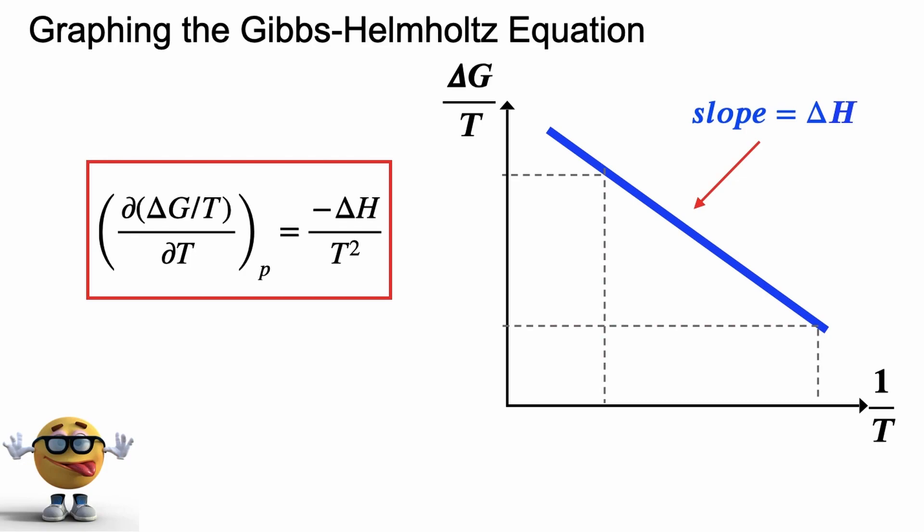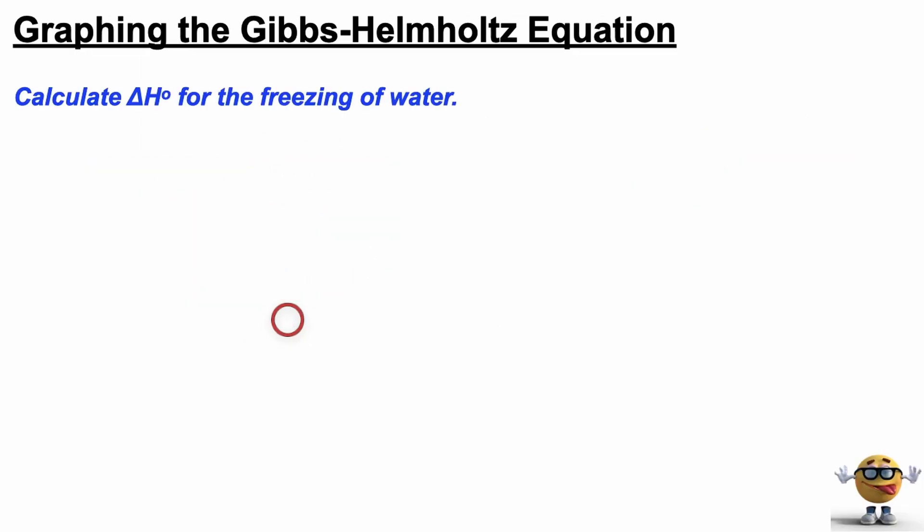Alrighty my friends, we're going to graph the Gibbs-Helmholtz equation. It's going to be short, it's going to be awesome. This is the differential form of the equation, and let's just jump into it. If you need to know how to derive the equation, I've got lots of videos on deriving it, but we're going to graph it today. And we're going to do that using an example, and this is the example. Calculate the change in enthalpy.